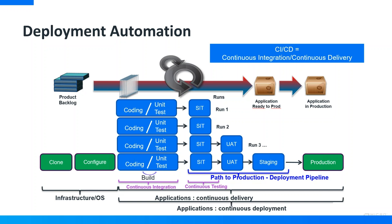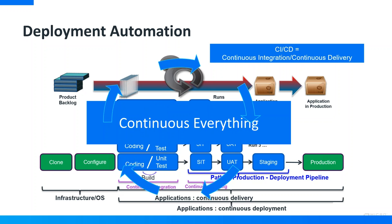Le Graal, c'est le Continuous Déploiement — je déploie automatiquement, d'environnement en environnement, sans intervention humaine. On est sur des process matures au sein de votre entreprise qui doivent vous permettre de tendre vers du Continuous Déploiement. Pour déployer ces applications, il faut également déployer l'infrastructure qui va les supporter. Le but final est de faire du Continuous Everything : Continuous Integration côté dev, Continuous Delivery côté opérationnel.